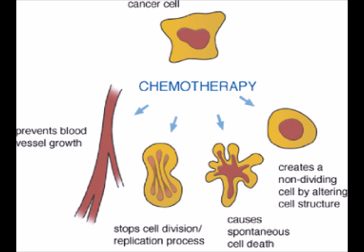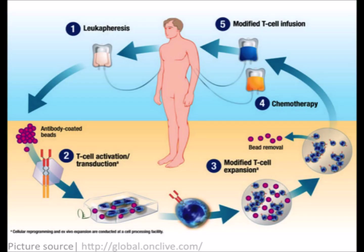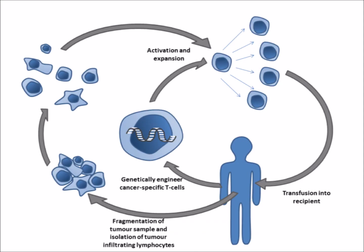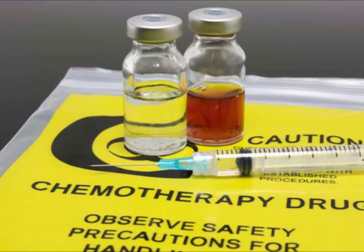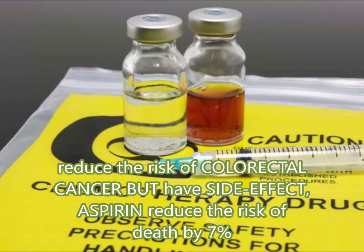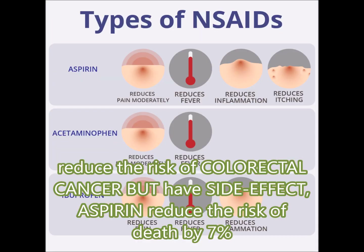Chemotherapy is also used, though it is very harmful to normal cells, and if taken long-term, many cells of the body are removed. Medication such as NSAIDs reduces the risk of colorectal cancer, but has side effects. Aspirin also reduces the risk of death by 7%. COX inhibitors decrease the rate of polyp formation, but also have side effects.